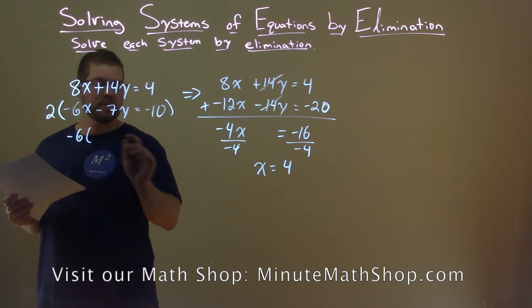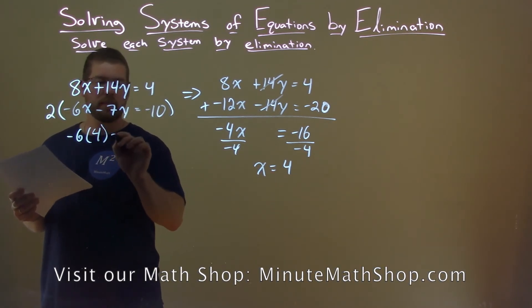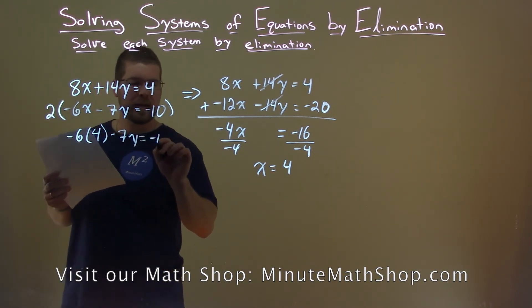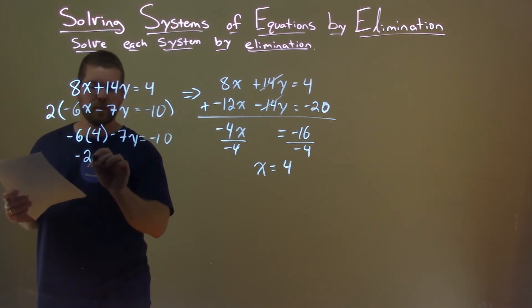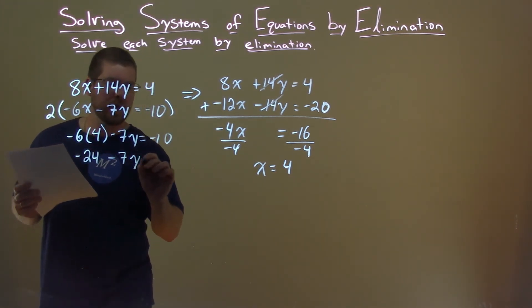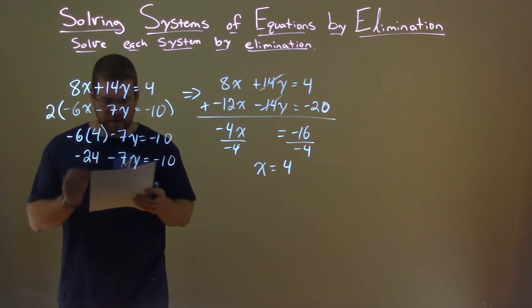Negative 6x, instead of x I'm putting a 4, minus 7y equals negative 10. Negative 6 times 4 is negative 24, minus 7y equals negative 10.